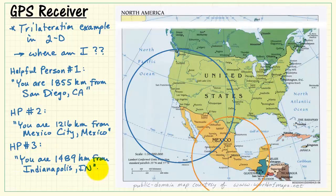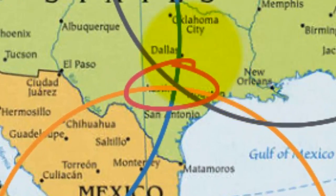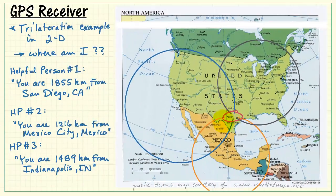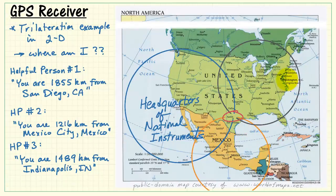Now a third person walks up and provides another measurement. Let me draw the circle. And now we have enough information to uniquely determine our own location. That would be right here. The intersection of all three circles looks like it's in the vicinity of Austin, Texas, which is the global headquarters of National Instruments.